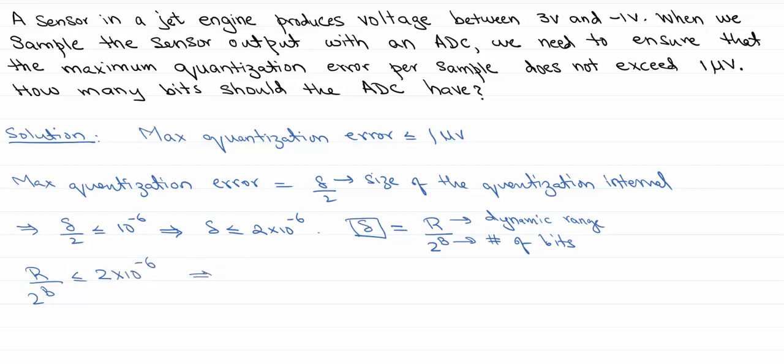Now r is simply 3 minus minus 1, so that is less than or equal to 2 into 10 to the minus 6, which means that we want 2 to the b to be greater than or equal to 2 to 2 times 10 to the 6.